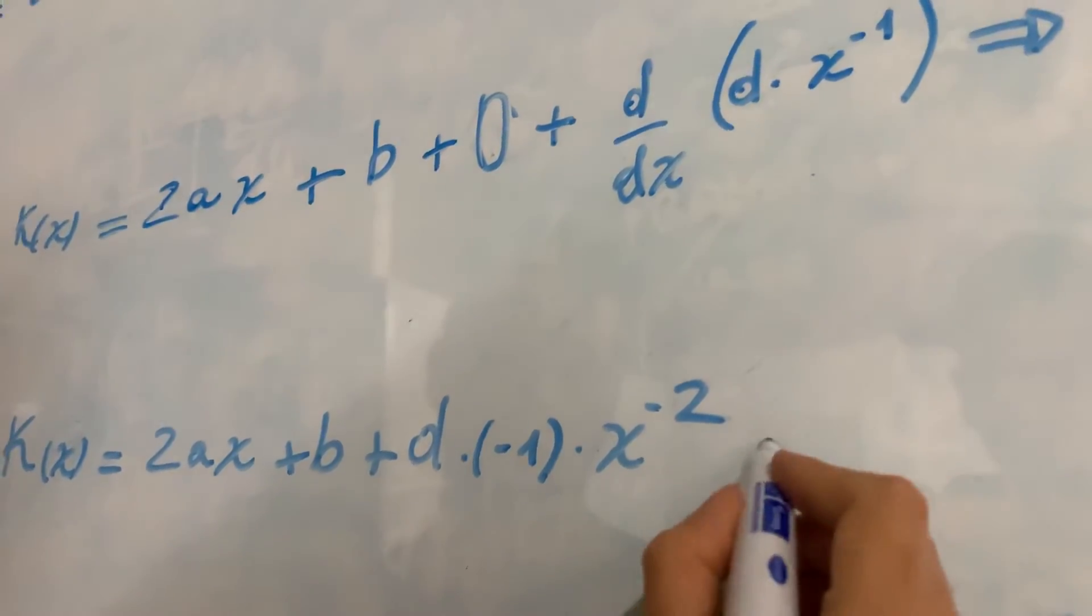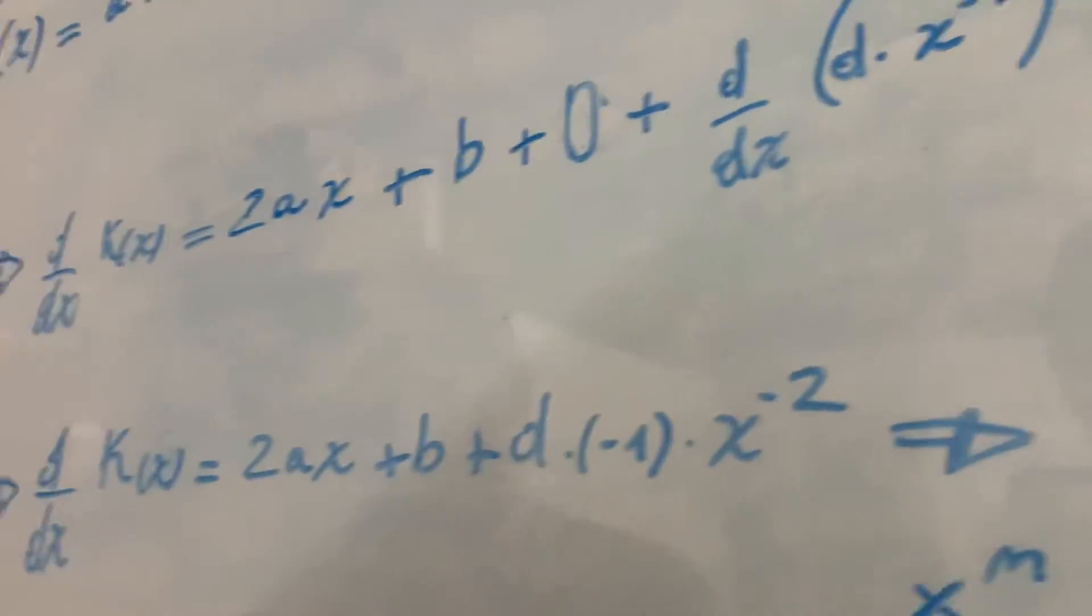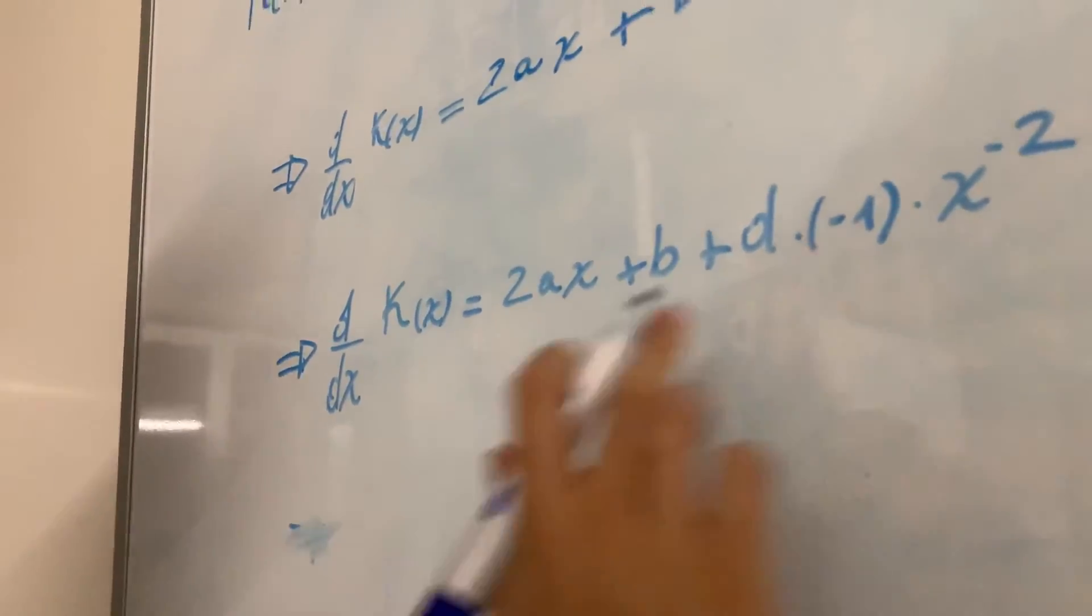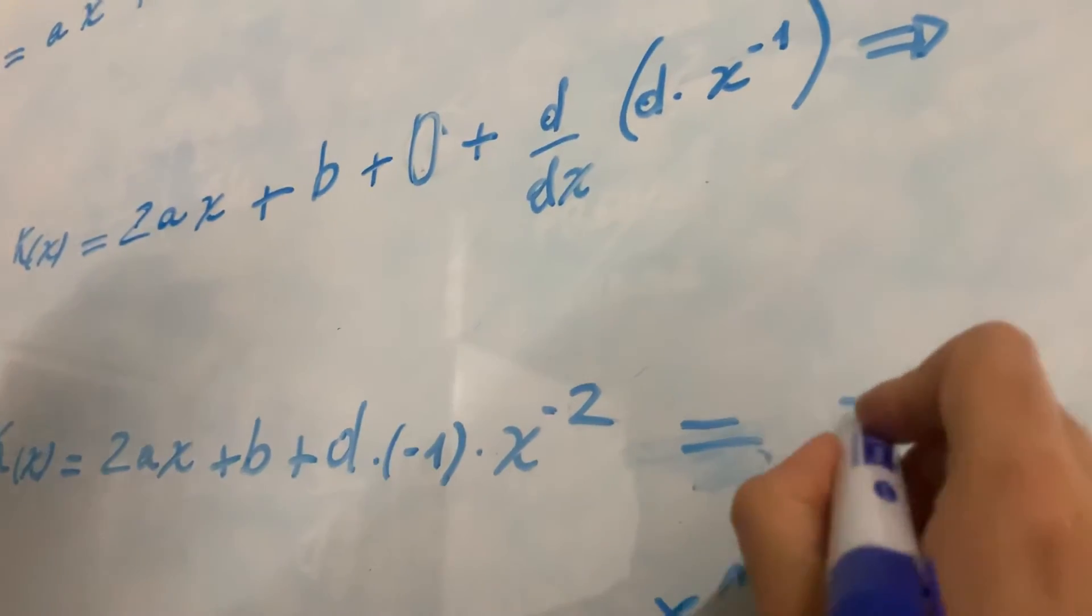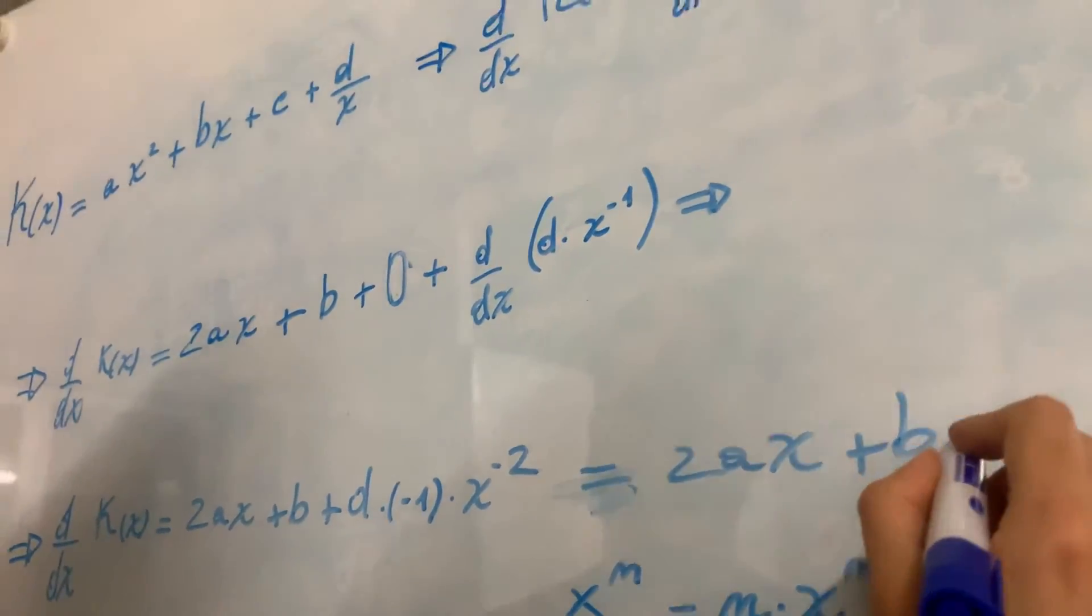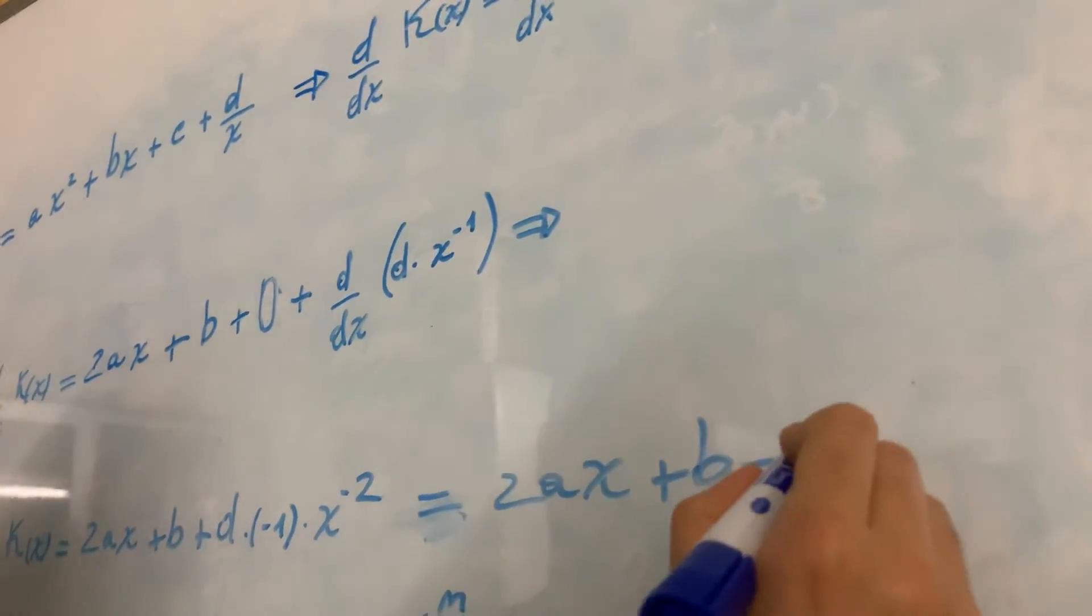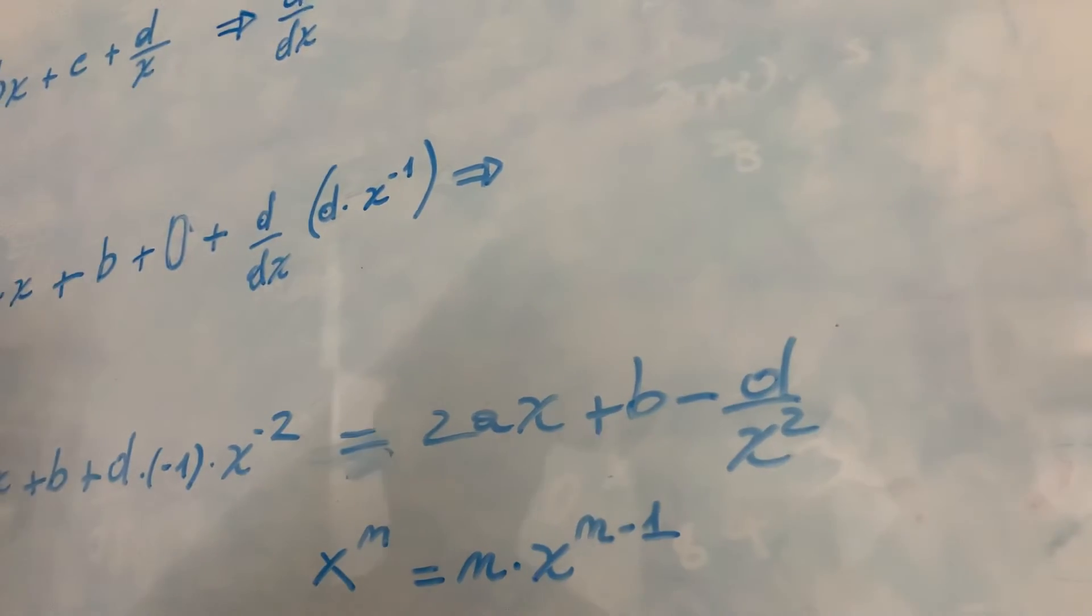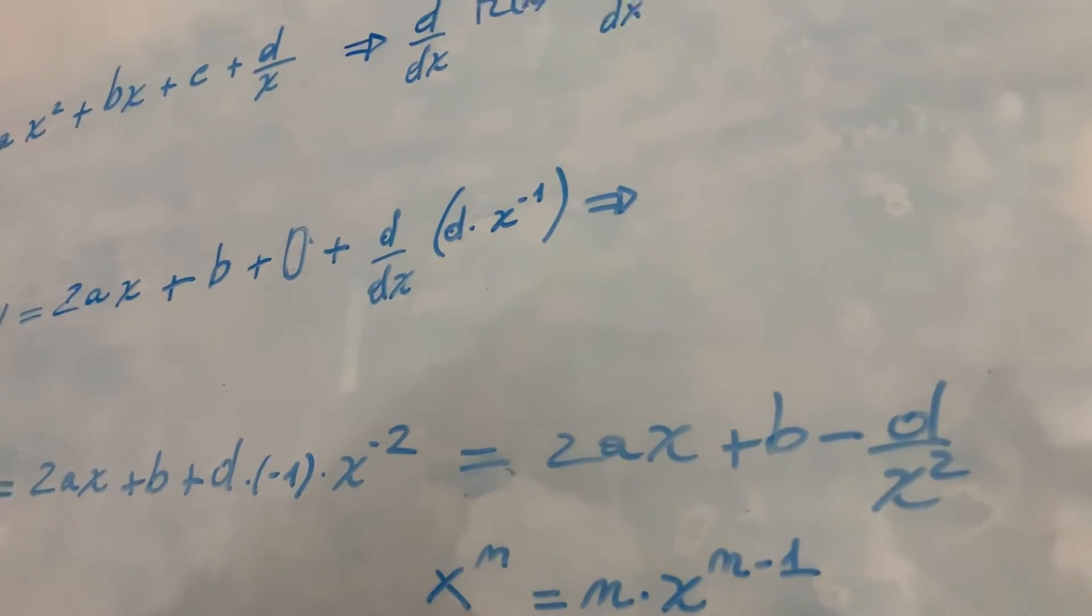So in the end, the result we can directly do is that this is equal to 2ax plus b minus d divided by x to the power of 2. That's it.